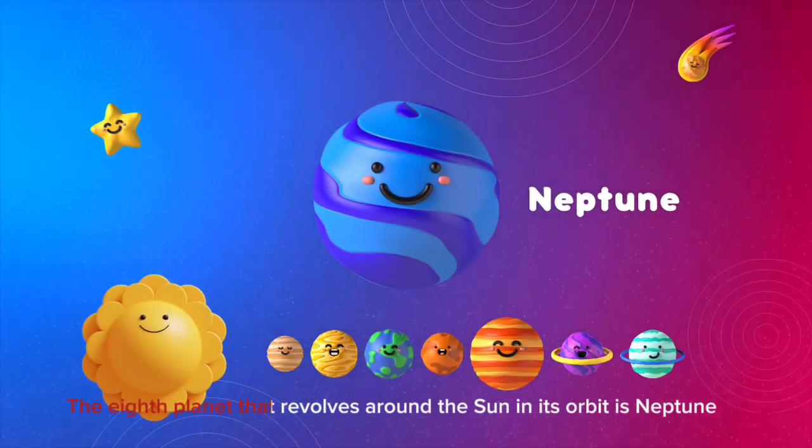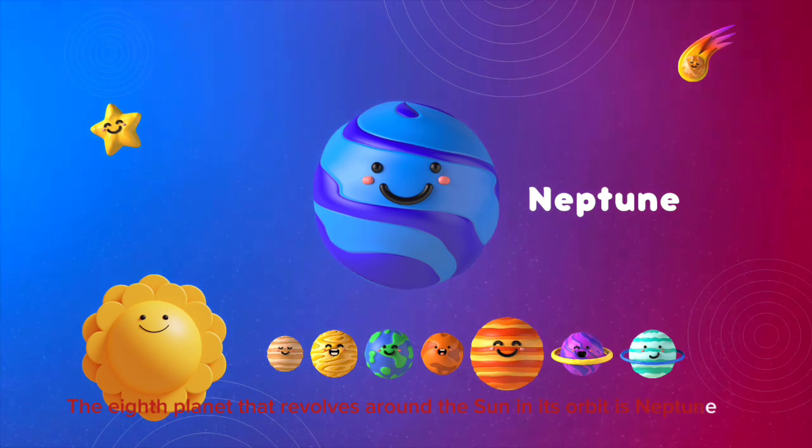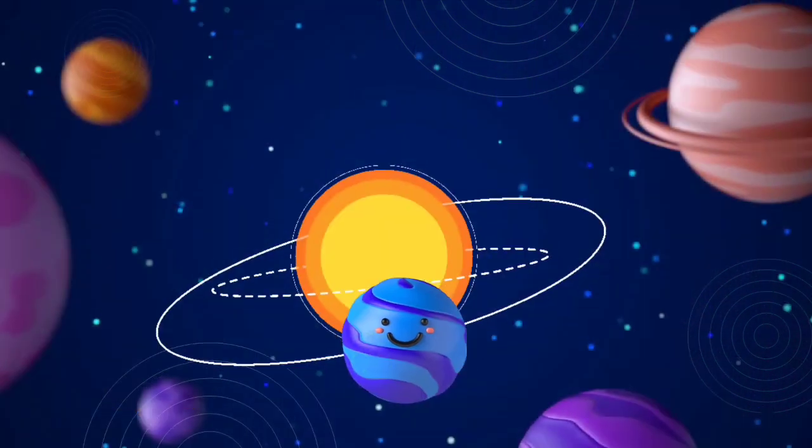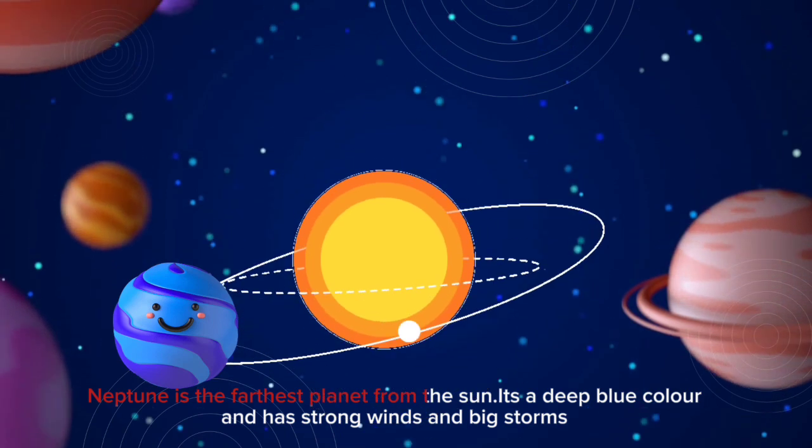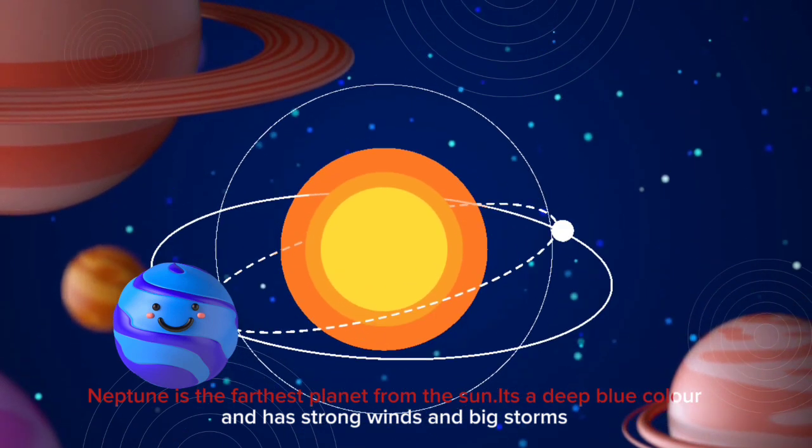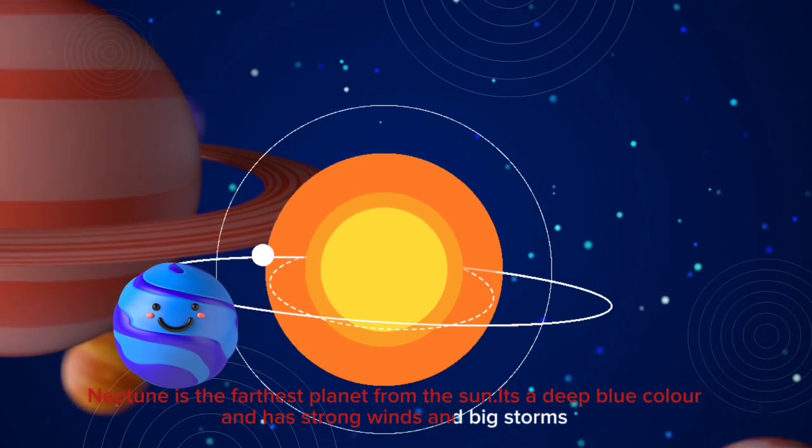The eighth planet that revolves around the sun in its orbit is Neptune. Neptune is the farthest planet from the sun. It's a deep blue color and has strong winds and big storms.